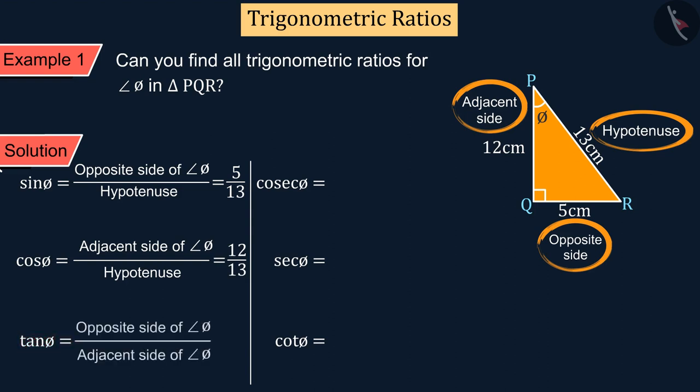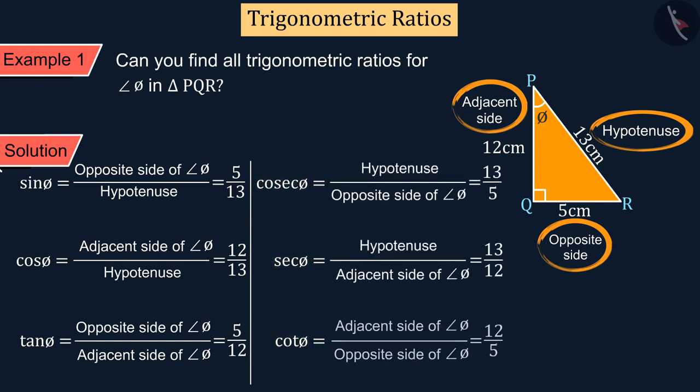Tan phi will be equal to the ratio of opposite side to the adjacent side. Also, we learned that cosec, sec, and cot are the reciprocal of sin, cos, and tan. In this way, we write all the trigonometric ratios for the angle phi in triangle PQR.